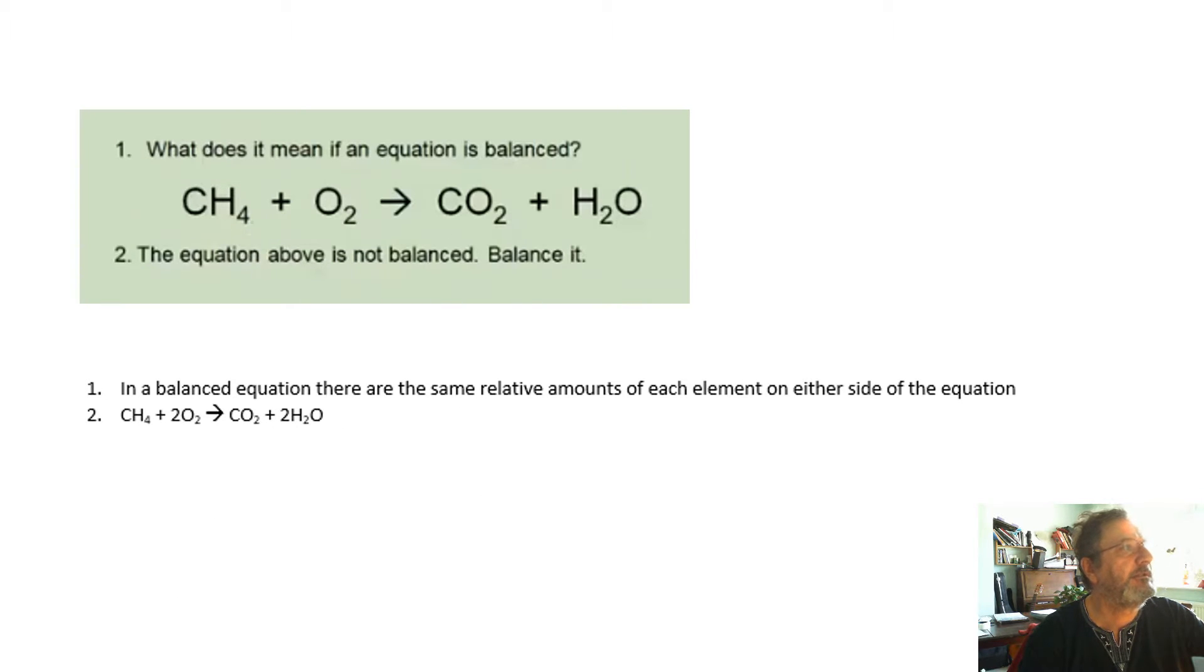Next, if an equation is balanced, then you've got the same relative amount of each element on either side of the equation. If you like, you've got the same number of atoms on either side of the equation. That isn't balanced, but there you see, I've balanced it.